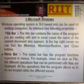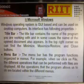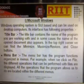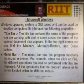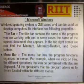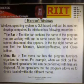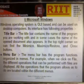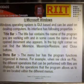Windows Operating System is UI based and can be used on the desktop of a computer. Its interface has the following properties. First is the Title Bar. The Title Bar contains the name of the program you are working with, and in some cases the name of the open document also appears. In the top right corner we can find the Minimize, Maximize, Restore, and Close buttons.